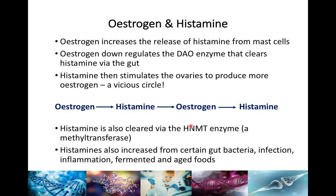Estrogen increases histamine, but estrogen also down-regulates the DAO enzyme in the gut that helps clear histamine. So mast cells are releasing histamine, the DAO enzyme is overloaded and not working, histamine builds up, and then histamine stimulates the ovaries to produce more estrogen — creating a really vicious cycle.